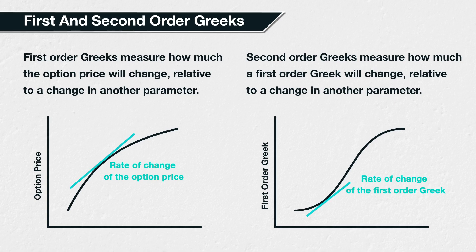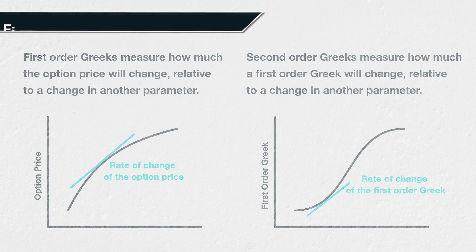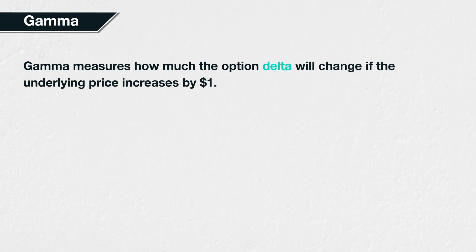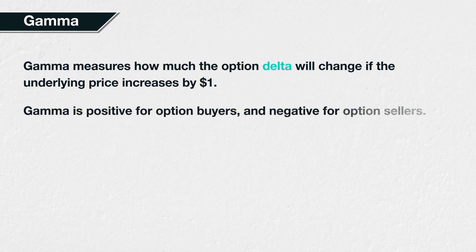Second-order Greeks measure the rate of change of a first-order Greek with respect to a particular parameter — in other words, they are measuring the rate of change of a rate of change with respect to a parameter. Gamma is a measure of the sensitivity of an option's delta to changes in the underlying price. More specifically, it tells us how much the option's delta is expected to change if the underlying price increases by one dollar. Gamma is always positive for option buyers.